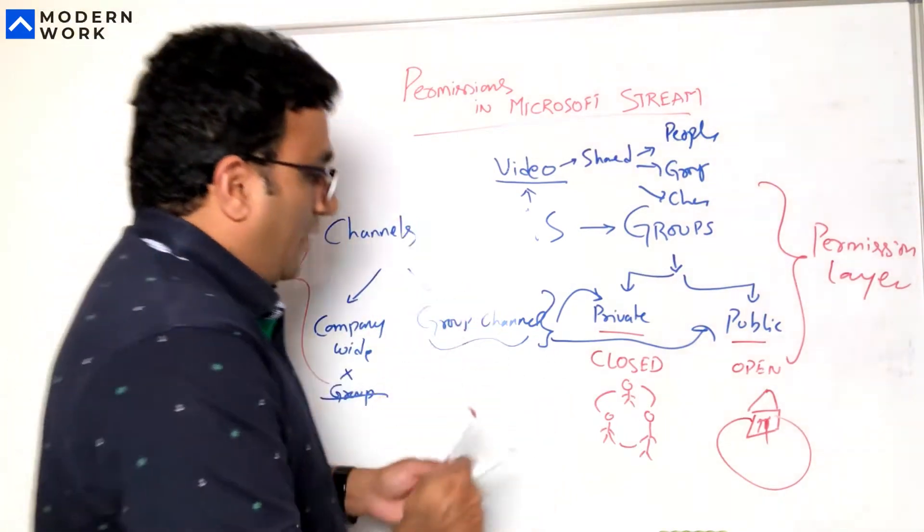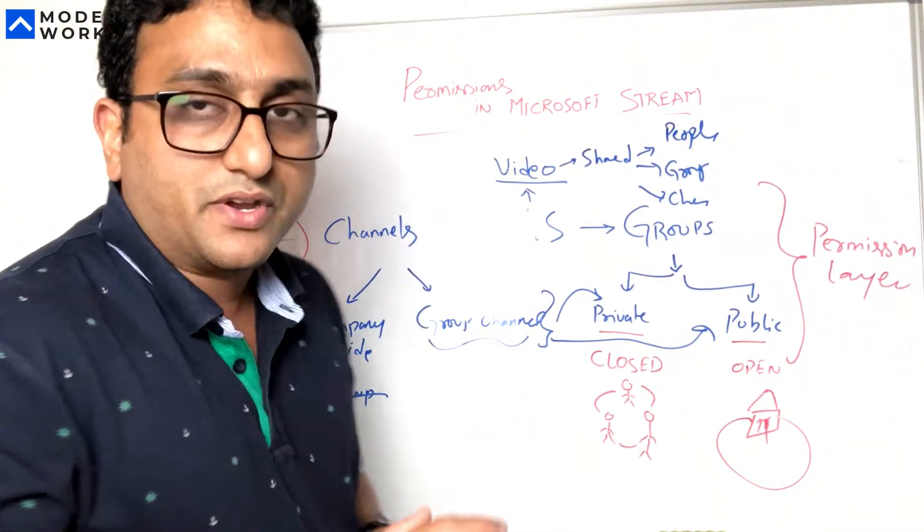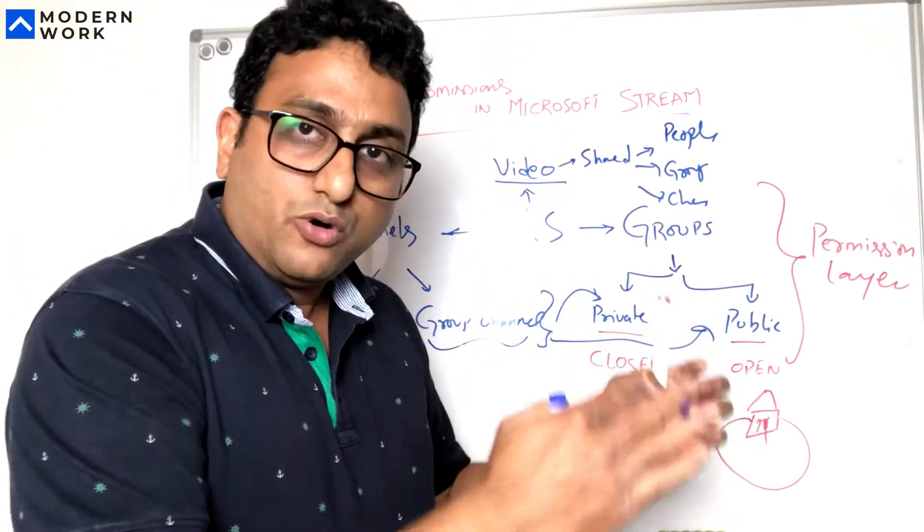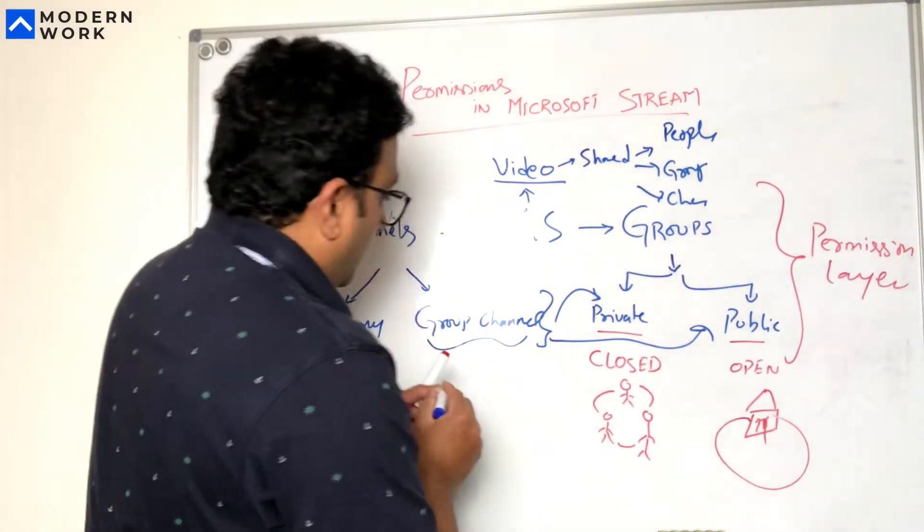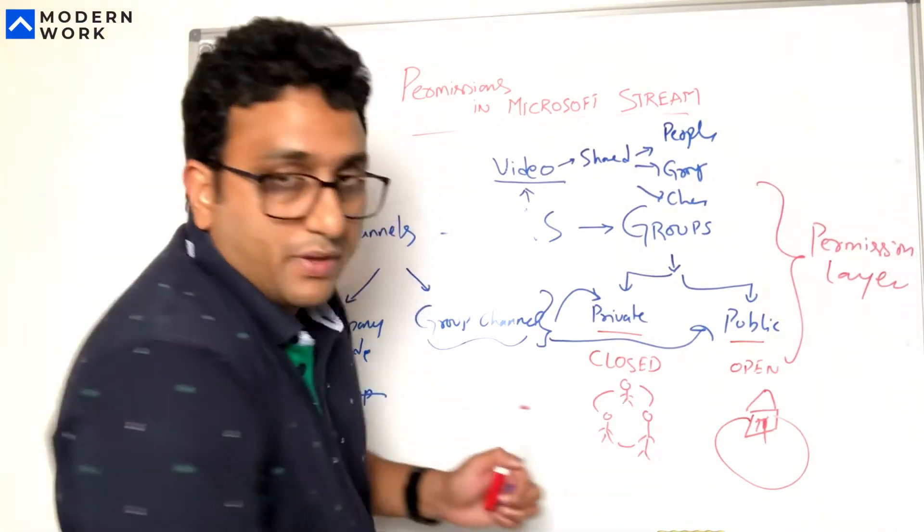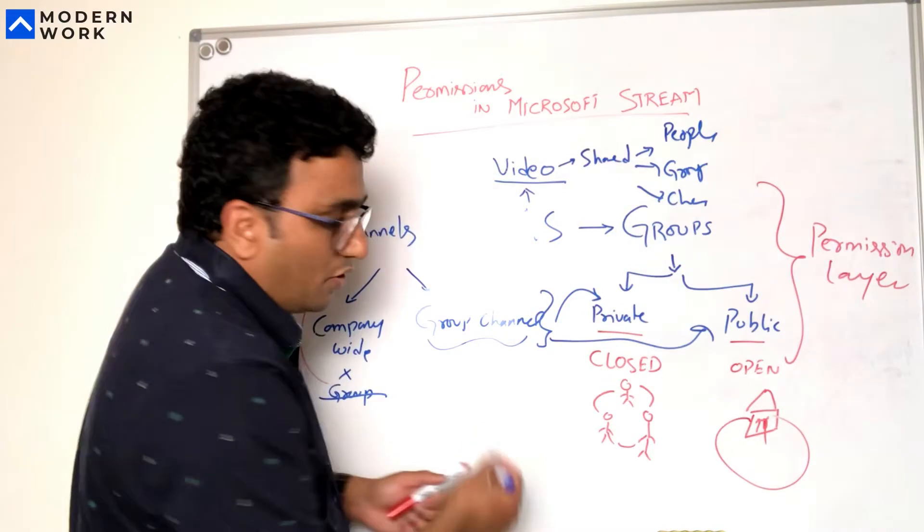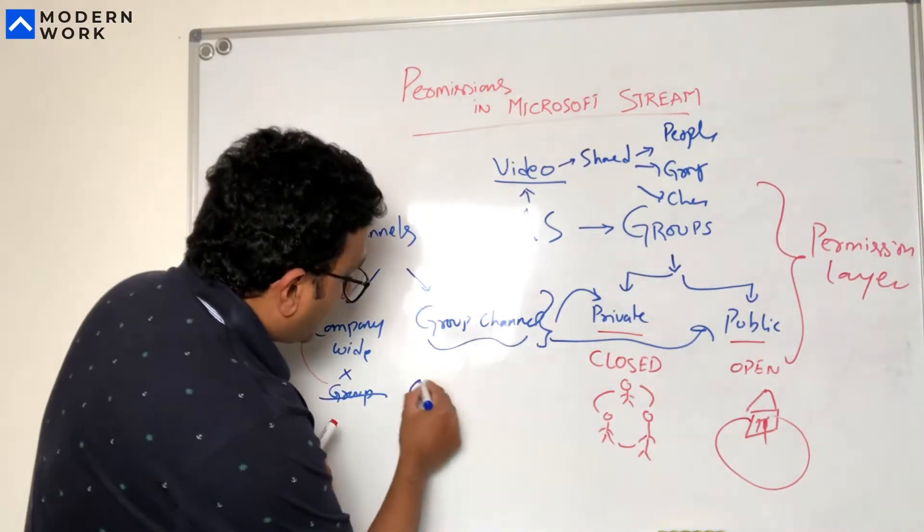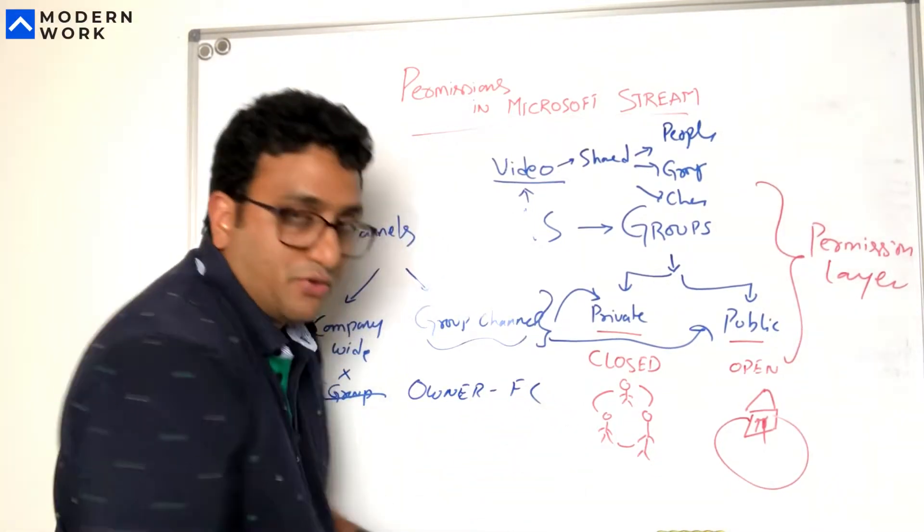Now coming to the permissions, there's two ways of how you look into permissions in Microsoft Stream which is you have owners and you have members. When you create a group you get to ask like who the members and who the owners of that group are. The owners have got full control, meaning you can view, edit, delete and things like that.